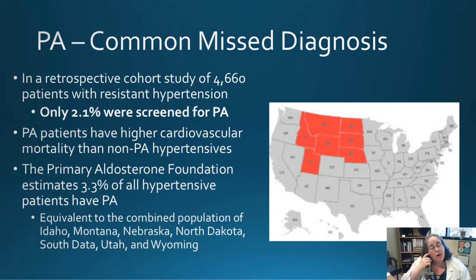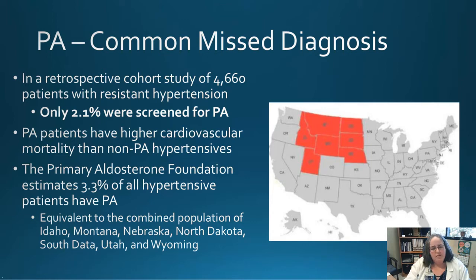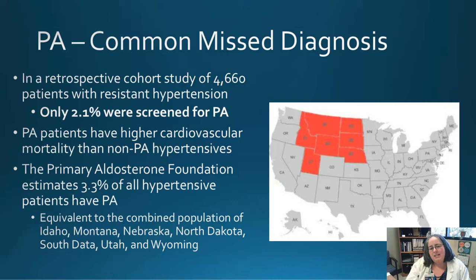When a patient presents with hypertension, they get a blood pressure reading and are immediately put on medication — without even taking the next step to screen for primary aldosteronism, which requires a very different treatment approach. Patients with primary aldosteronism have higher cardiovascular mortality, more cardiac events, and need to be treated more aggressively than non-PA patients.